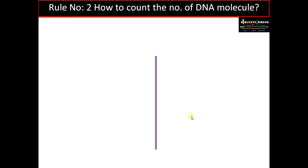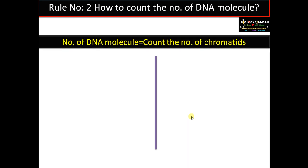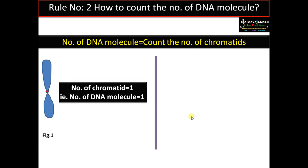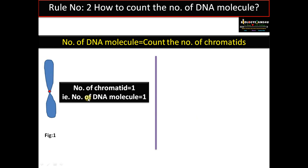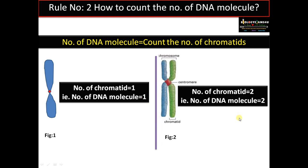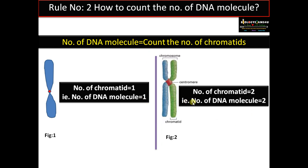Rule number two: how to count the number of DNA molecules. To count the number of DNA molecules, simply count the number of chromatids. In this figure, the number of chromatids is one, therefore the number of DNA molecules is also one. In a duplicated chromosome after the synthetic phase, there are two chromatids, therefore the number of DNA molecules is also two.